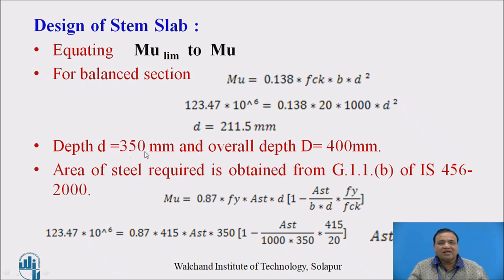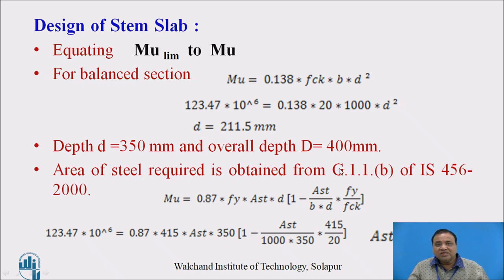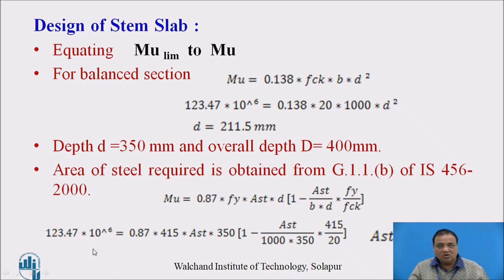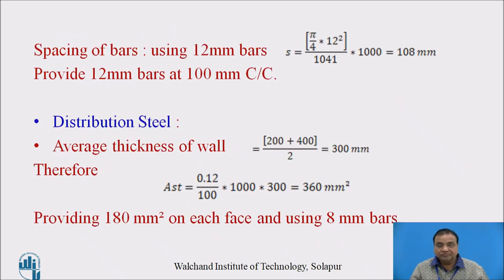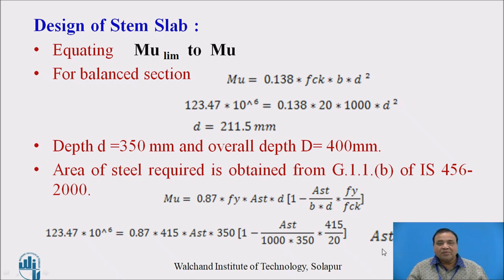We take the effective depth as 350 mm to be on the safer side, and the overall depth D is 400 mm considering 50 mm clear cover. The area of steel required is obtained using equation G.1.1B of IS456-2000, equating MU = 0.87 fy Ast d into (1 minus Ast fy upon b d fck). Substituting all values, the area of steel works out to 1041 mm squared.